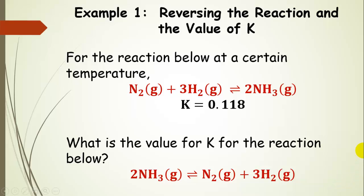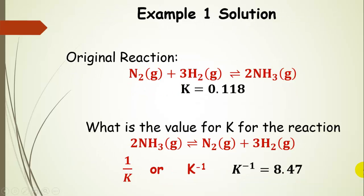Let's look at an example. We have a reaction where nitrogen and hydrogen react to form ammonia, with an equilibrium constant of 0.118. We want to find the equilibrium constant for the reversed reaction, where ammonia is in equilibrium with nitrogen and hydrogen as products. The equilibrium constant for the reversed reaction is 1 divided by 0.118, or 0.118 to the negative 1 power, which gives 8.47.